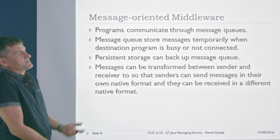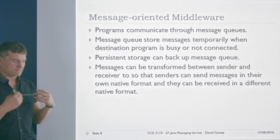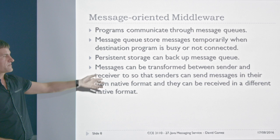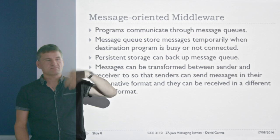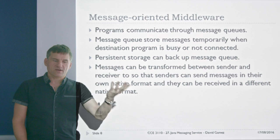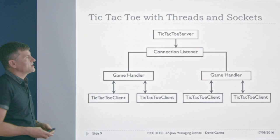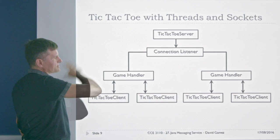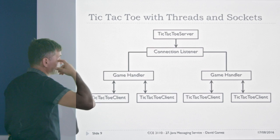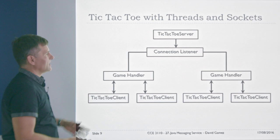Message-oriented middleware typically works through message queues, which store messages temporarily while the destination program is busy or not connected. You can do nice things like backing up message queues to a hard drive or the cloud. You can even transform messages between sender and receiver so that senders can send in one format and the receiver reads it in another — like having an email server automatically translate your English email into Russian for a Russian-speaking friend.